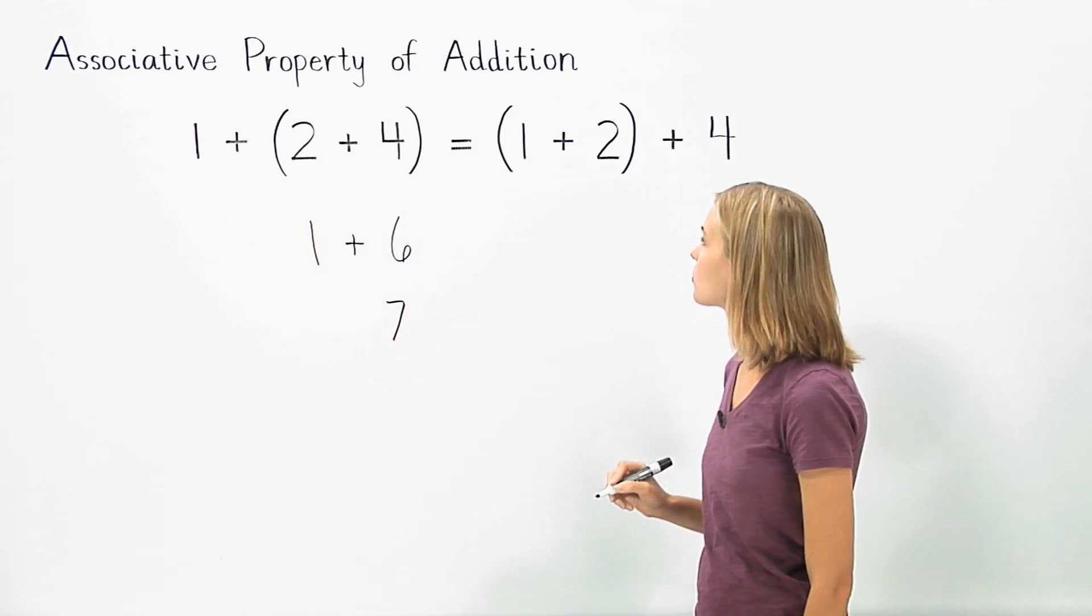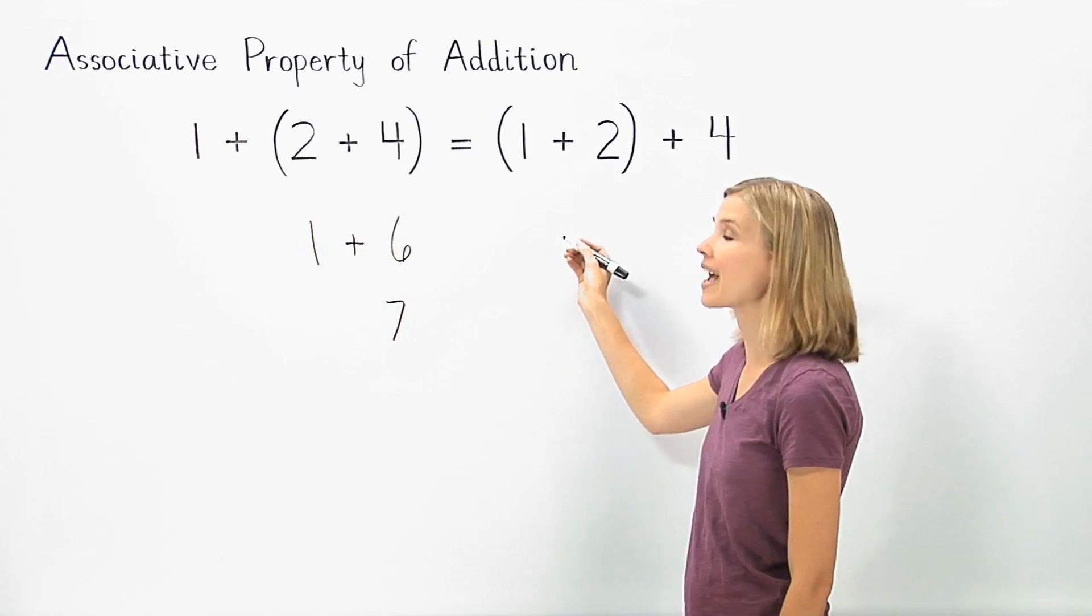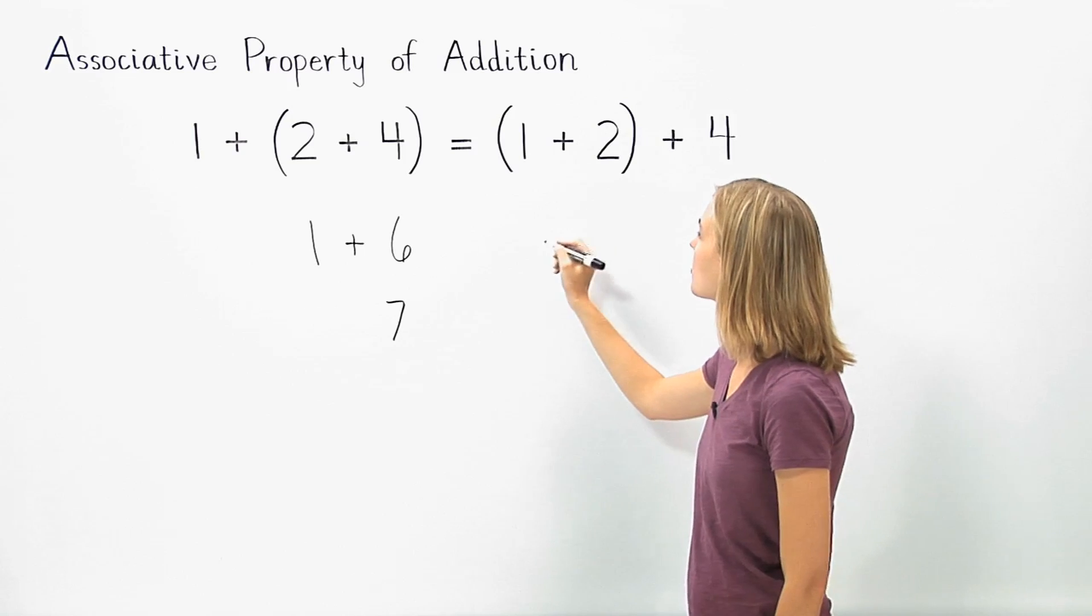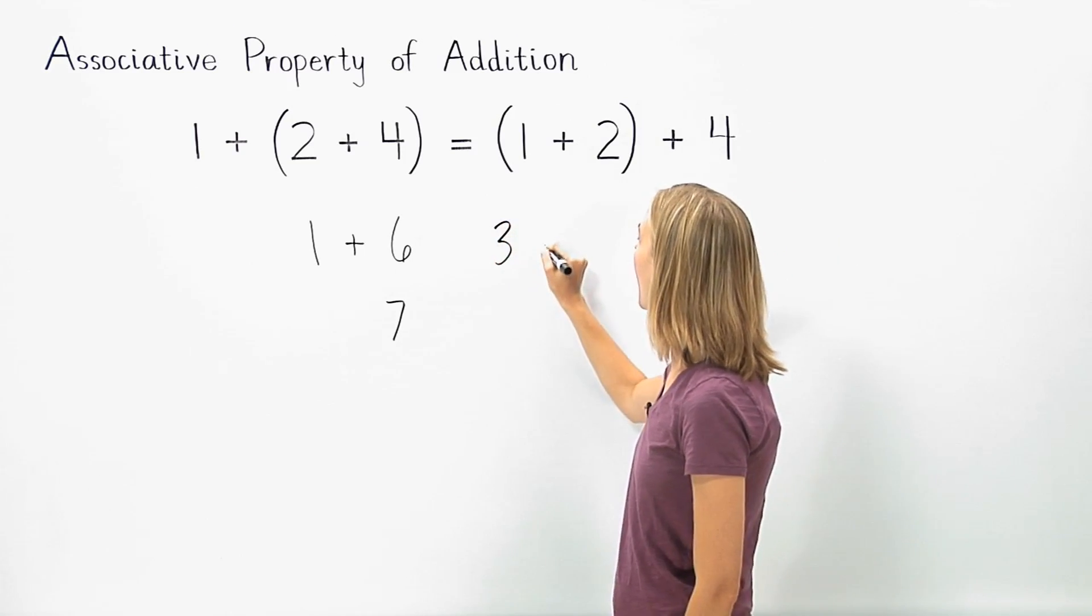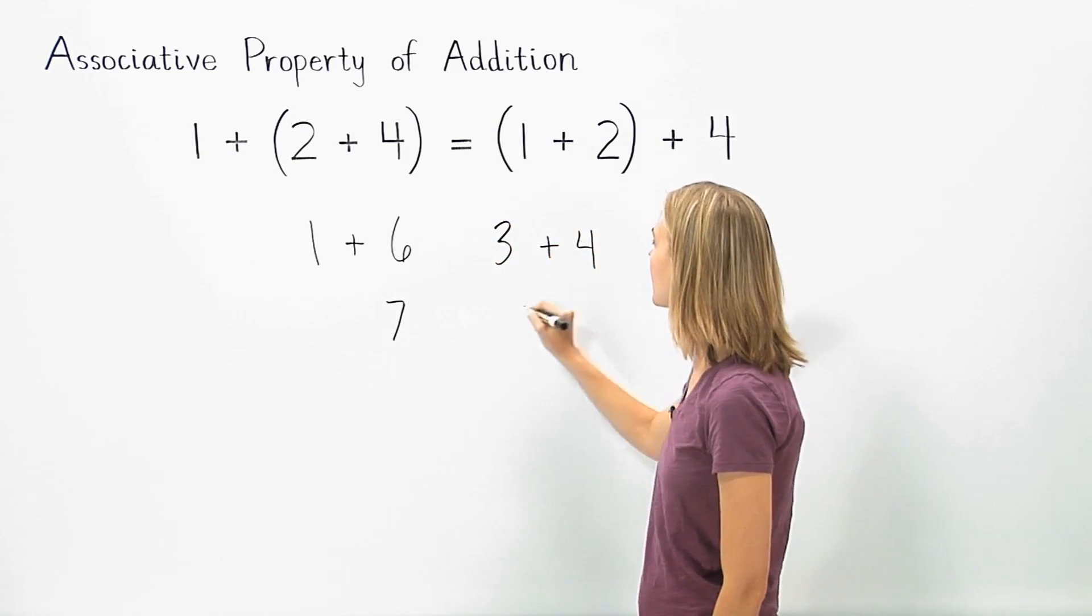And on the right side of the problem, we must also simplify inside the parentheses first. So 1 plus 2 is 3, and 3 plus 4 is 7.